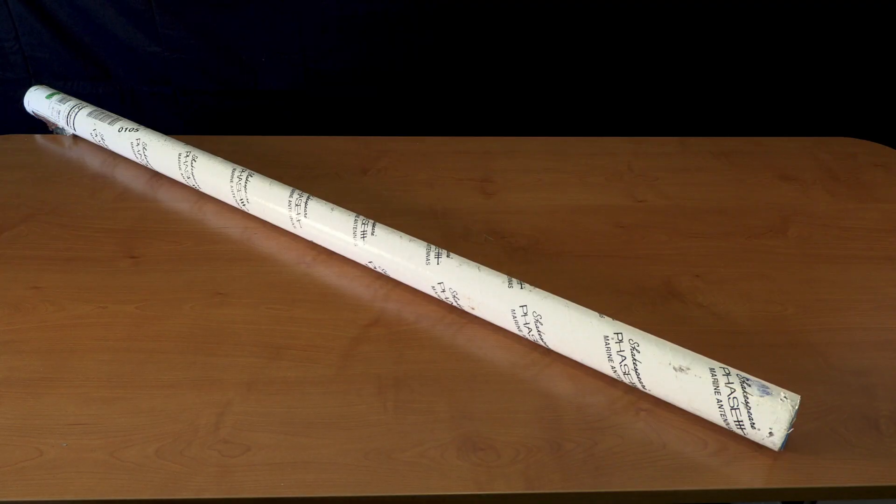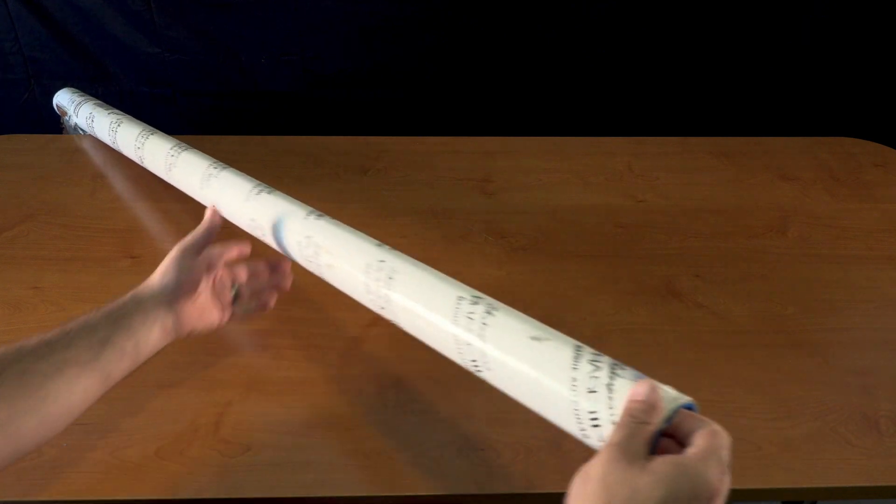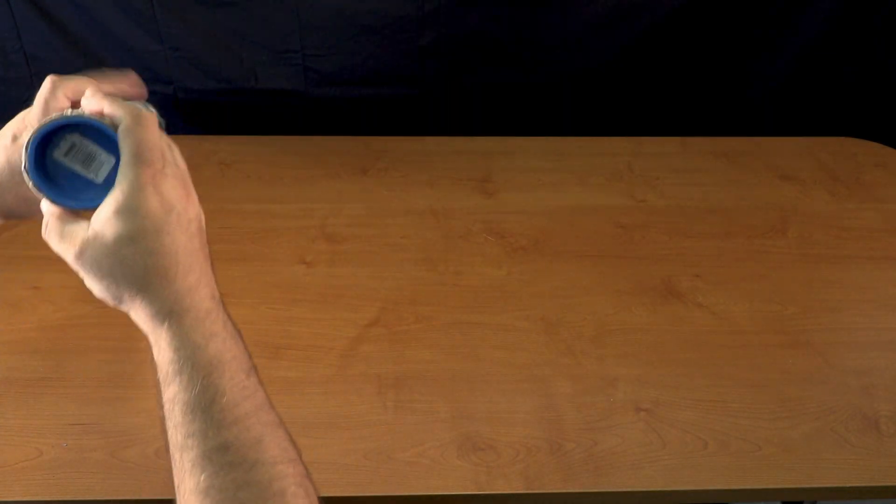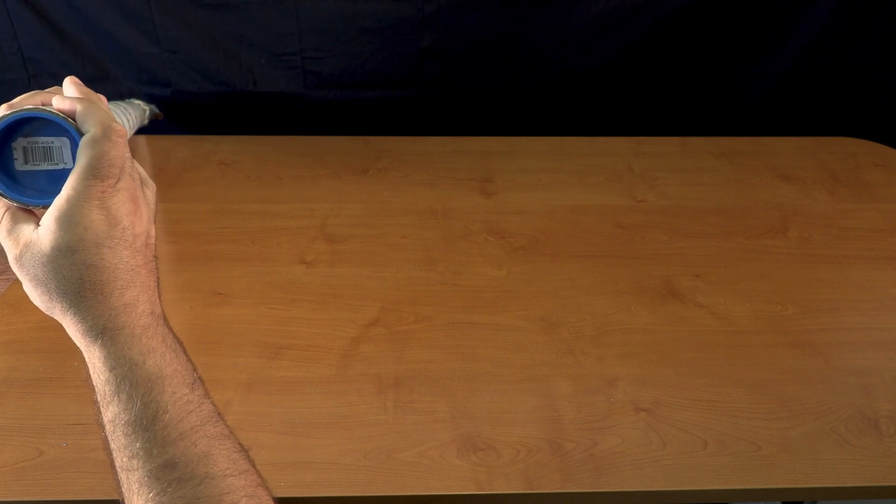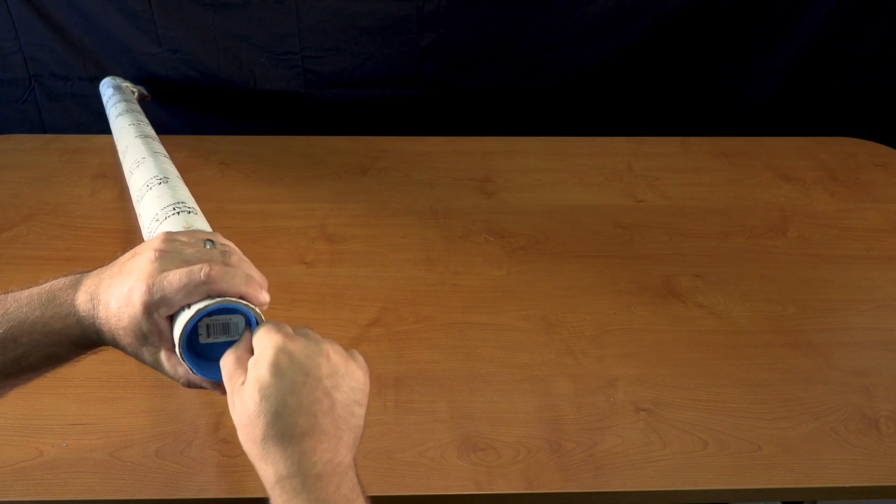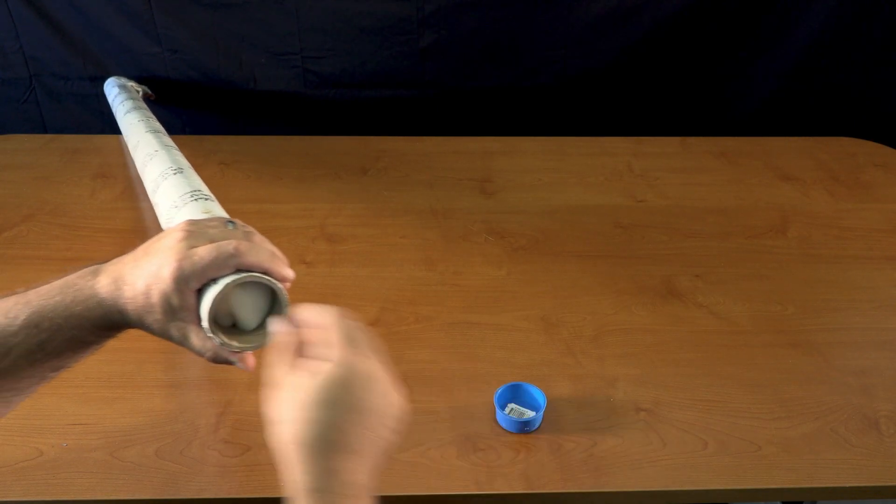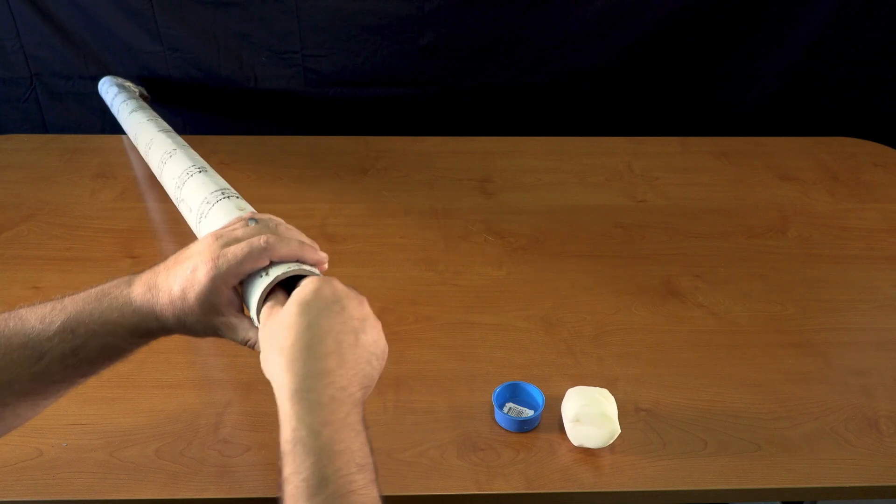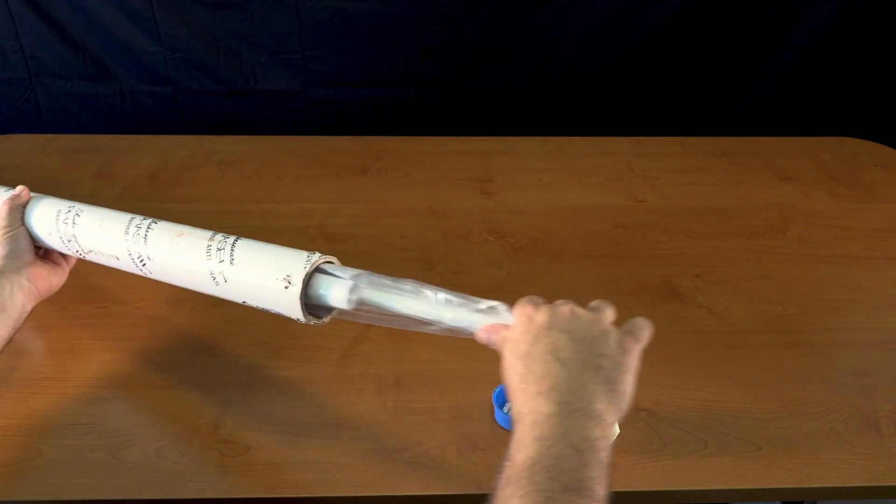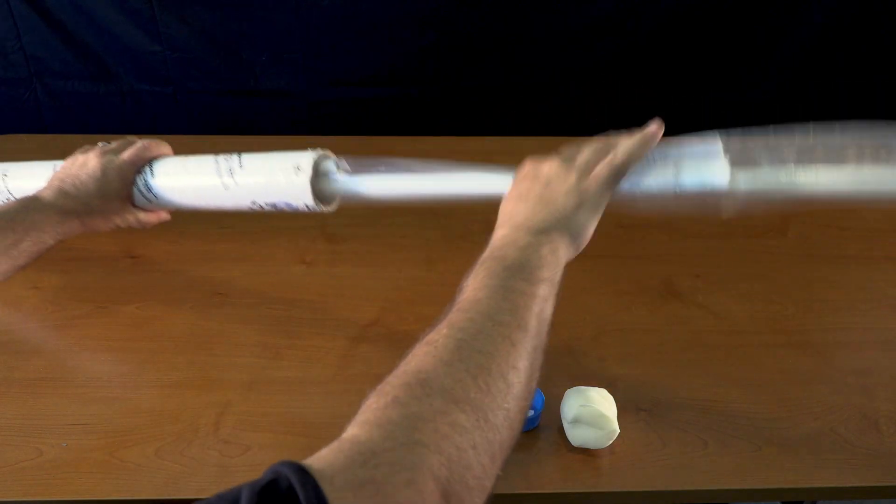Hey guys, today we're going to be unboxing the Shakespeare Phase 3 marine antenna. This is part number 6396-AIS-R. This is a VHF AIS antenna, our commercial grade antenna.